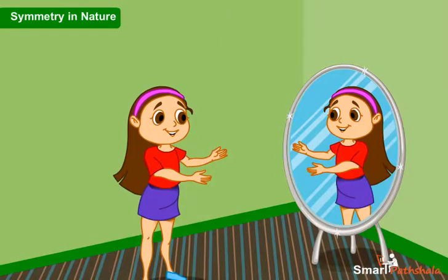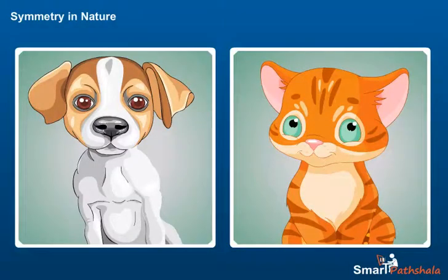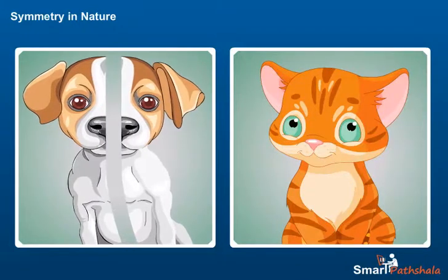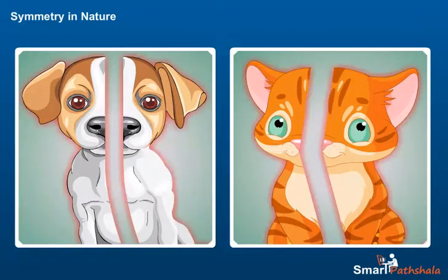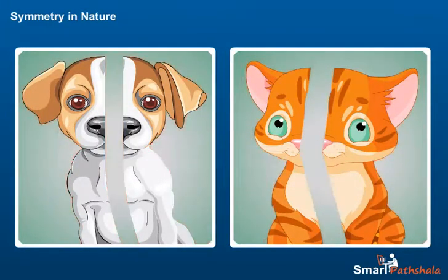When we look into a mirror, we see an identical image. Similarly, if we divide the face of a dog or cat from the middle, both the left and right parts are exactly similar. Thus, we can say that the left and right parts are symmetrical in nature.